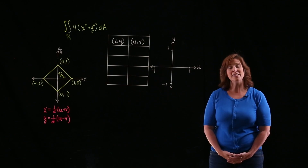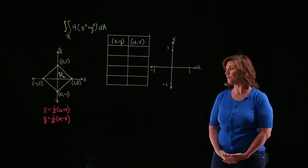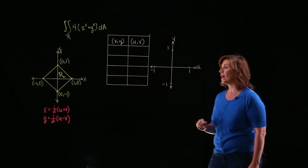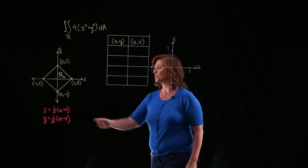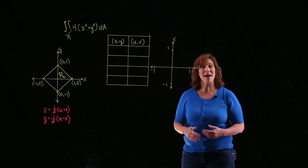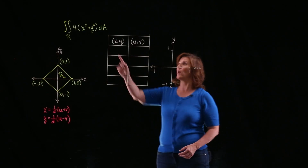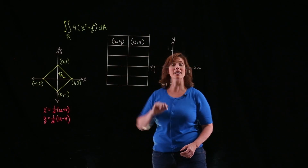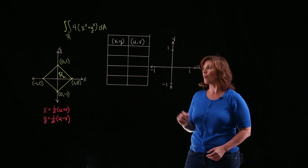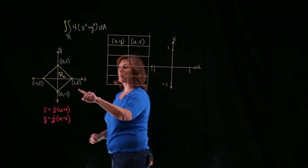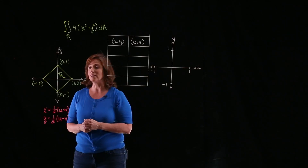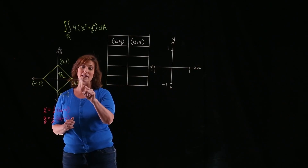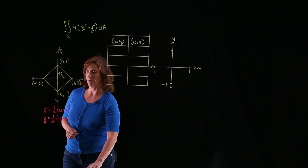Hi, everyone. I'm Cheryl. In this problem, we're going to be using the change of variables x equals one-half times the quantity u plus v, and y equals one-half times the quantity u minus v, to help us evaluate this double integral over the region r, which is pictured right here. The first thing we're going to do is get the image by looking at the change of variables.